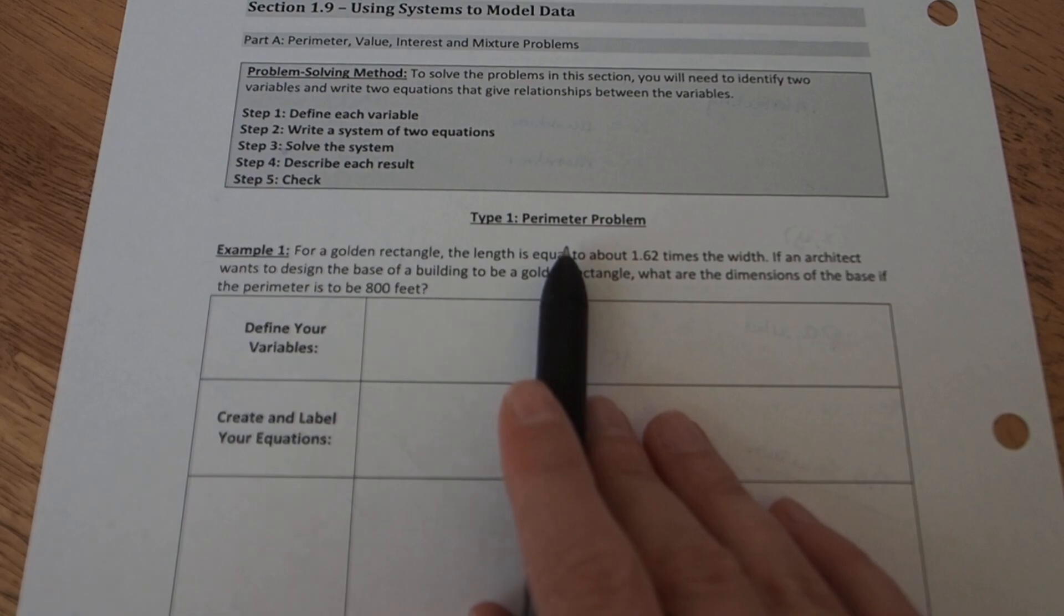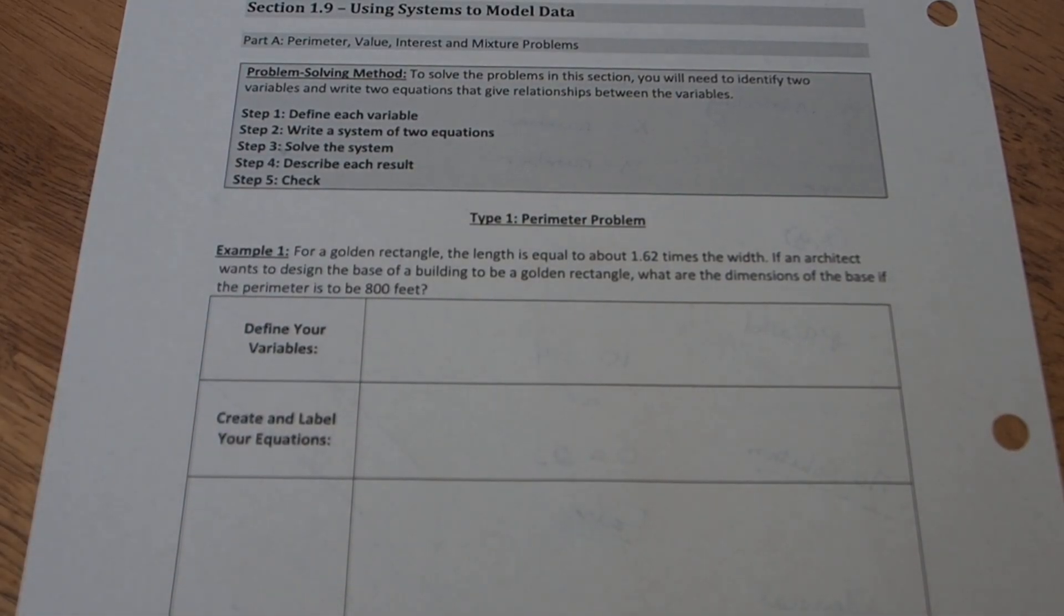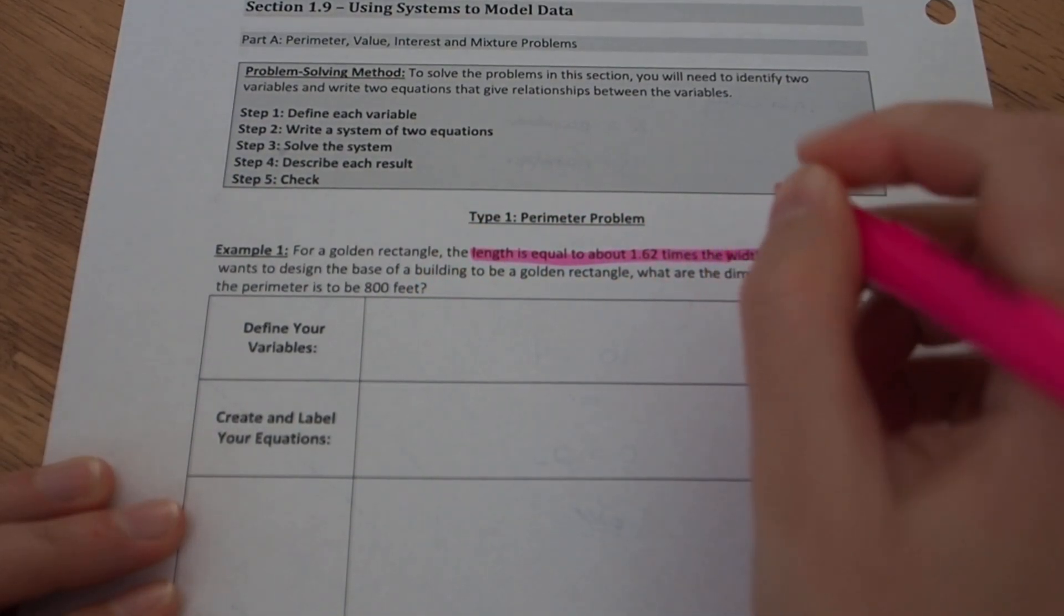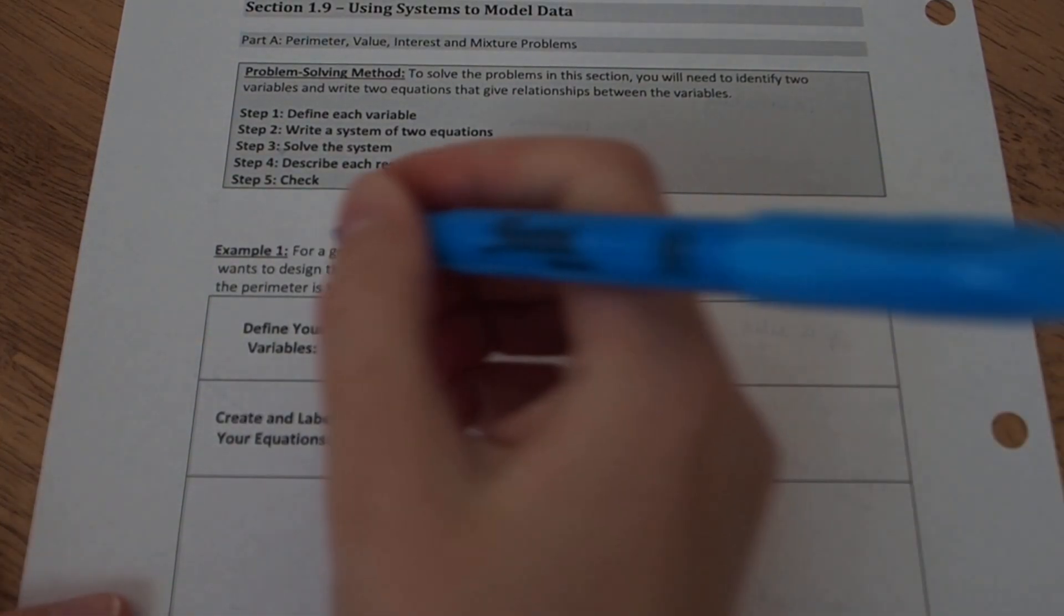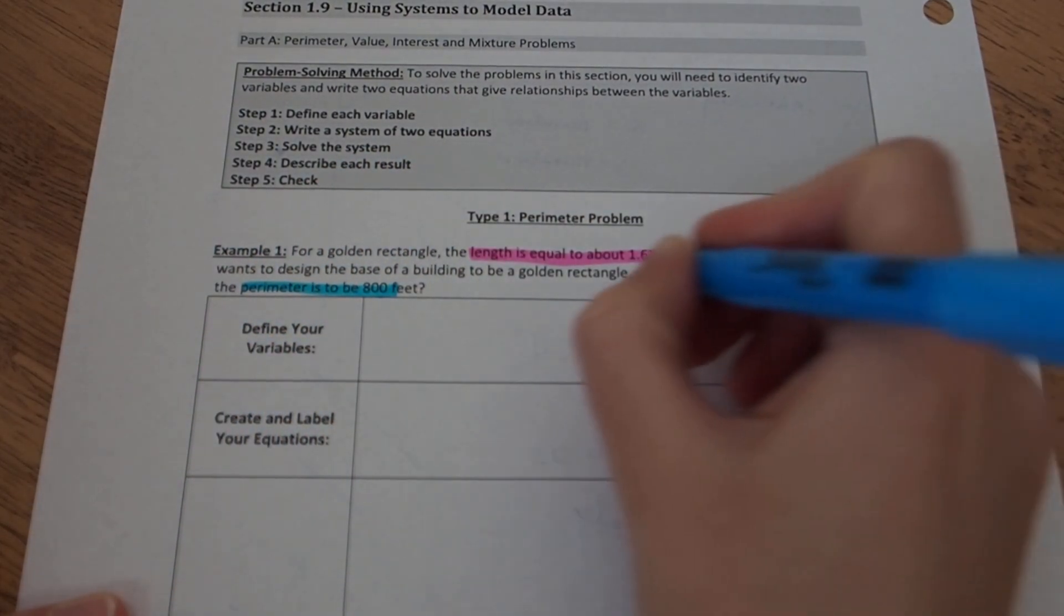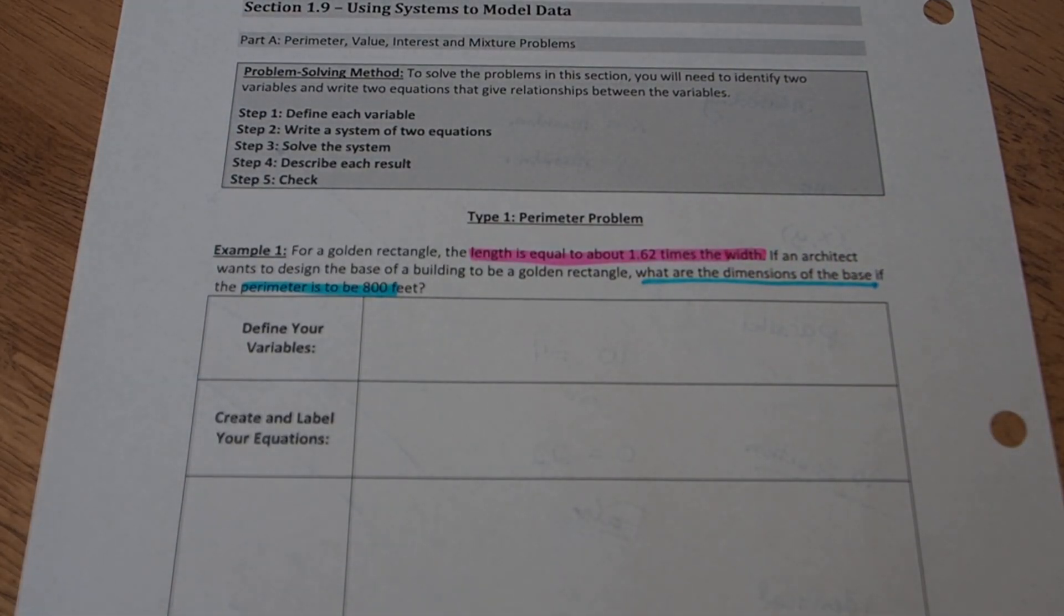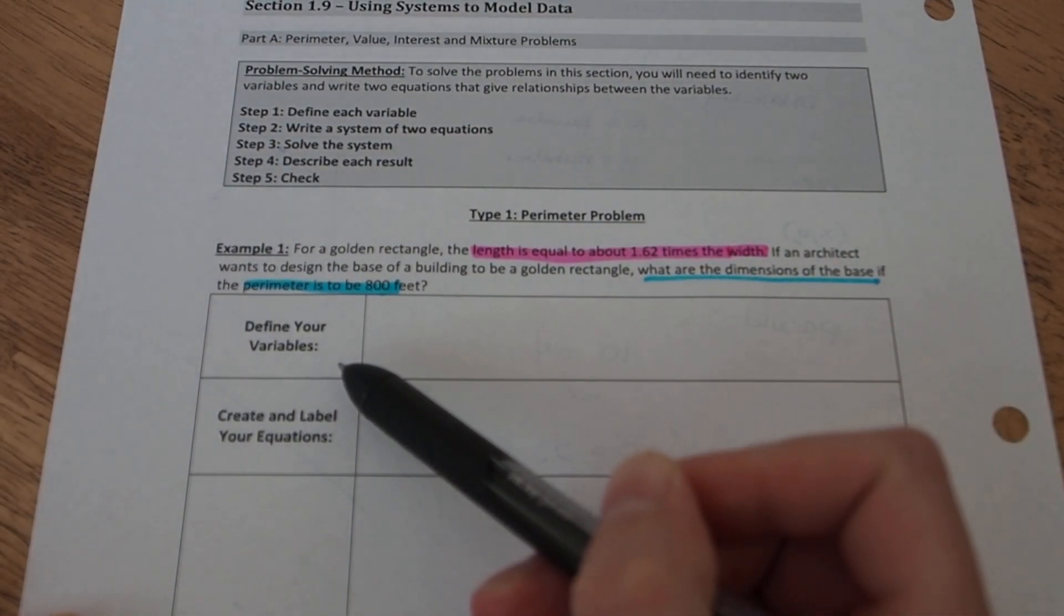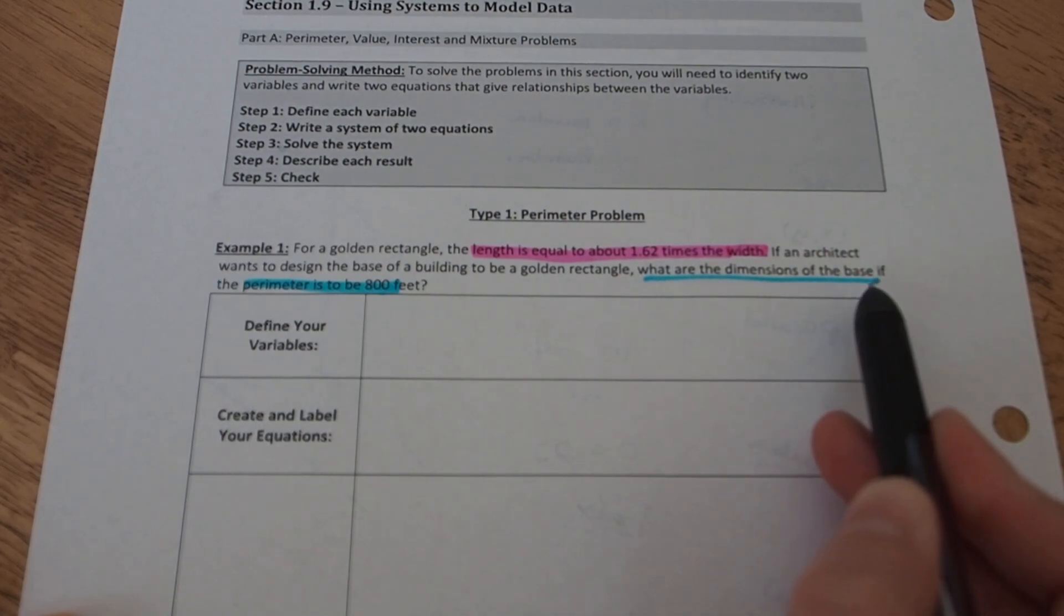This first one is a perimeter problem. The statement is that for a golden rectangle, the length is equal to about 1.62 times the width. If an architect wants to design the base of a building to be a golden rectangle, I want to know what are the dimensions of the base if the perimeter is to be a hundred feet. I just like to look over the information I'm given, and I want to figure out how to write not just one, but two equations with this information. The first thing to do is figure out what my variables are going to be. The variables need to be the types of things that we're trying to find.